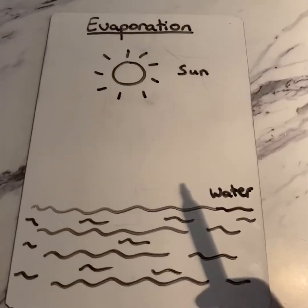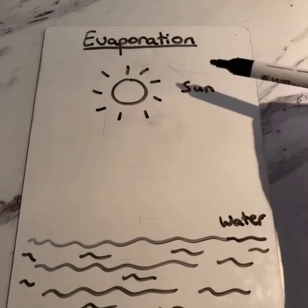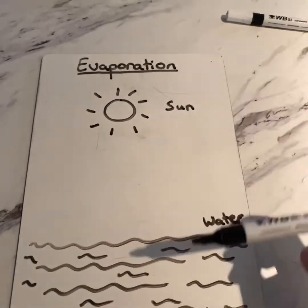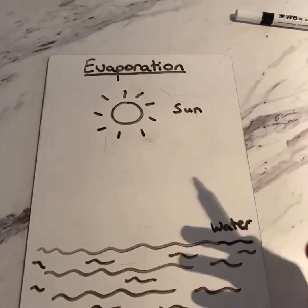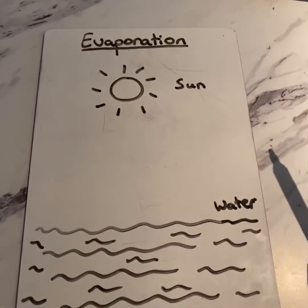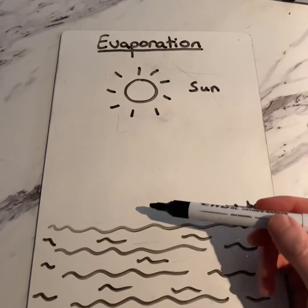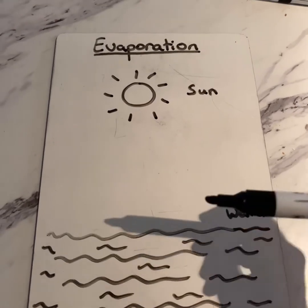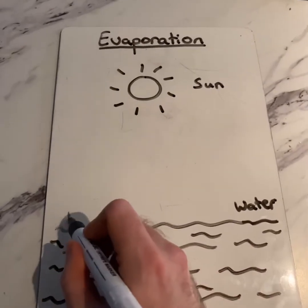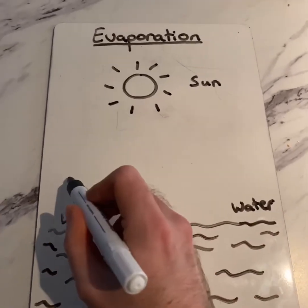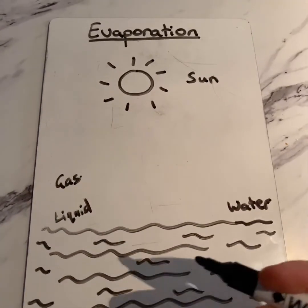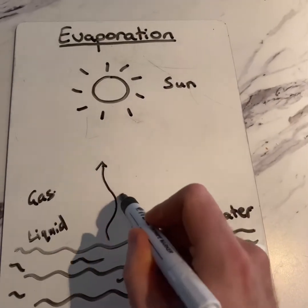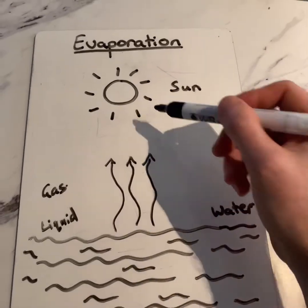On planet Earth, there are two things that we see all the time: water and the sun. Unless you live in Scotland — we rarely see the sun! The sun heats up the planet; it provides us with warmth and heat. The sun's rays travel down and heat up the water in the sea and oceans. As this water heats up, it changes from a liquid into vapour — a gas-like state. As it gets lighter, the water vapour floats up into the air.